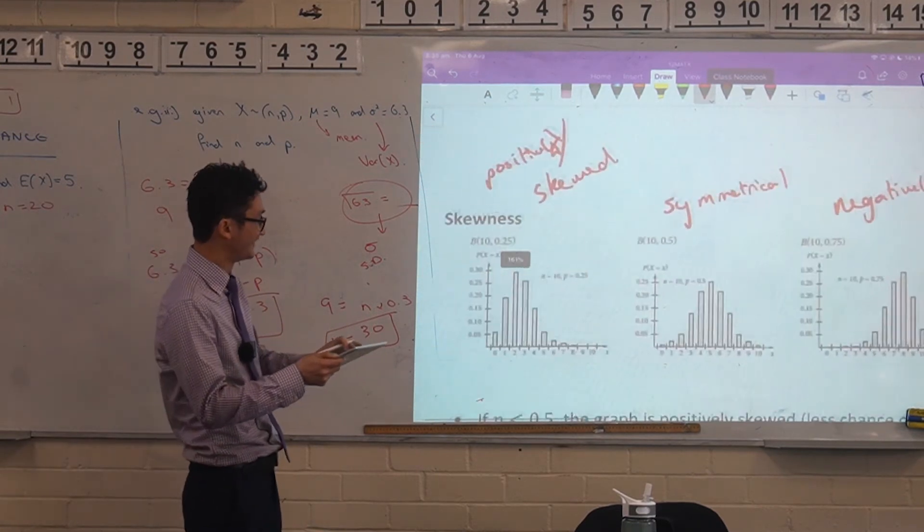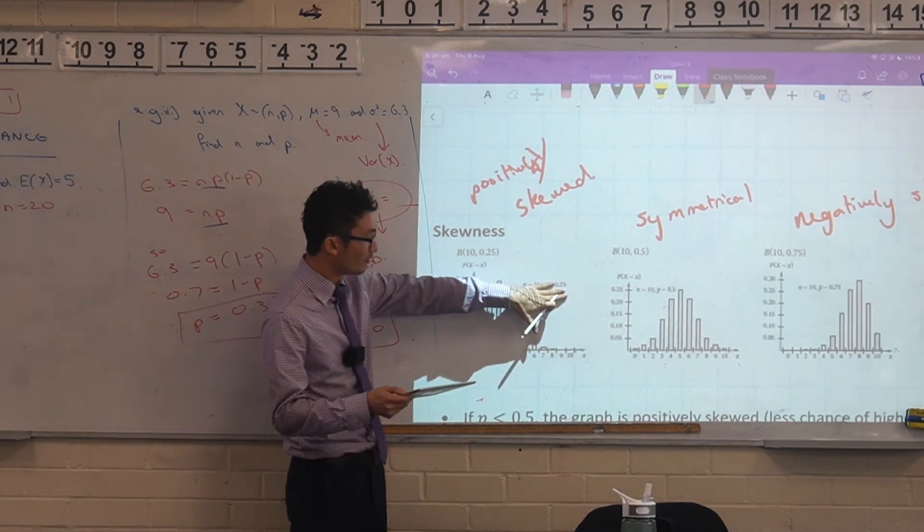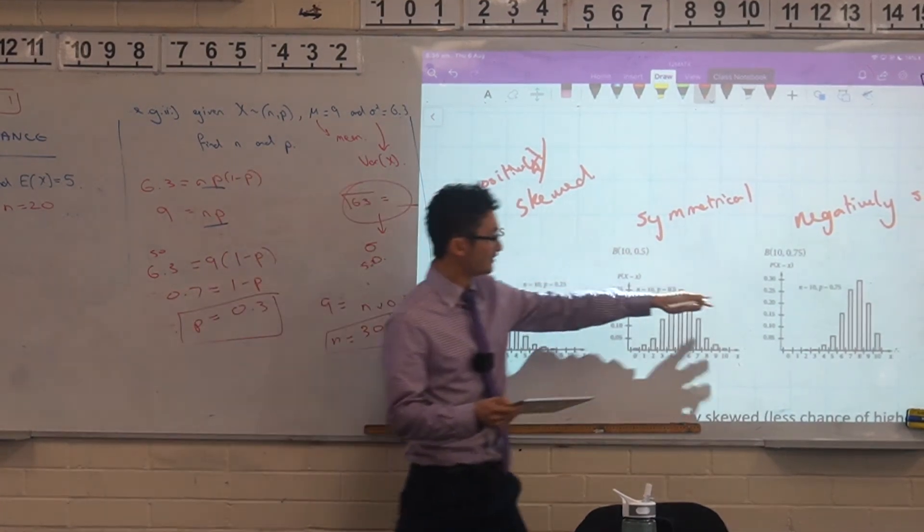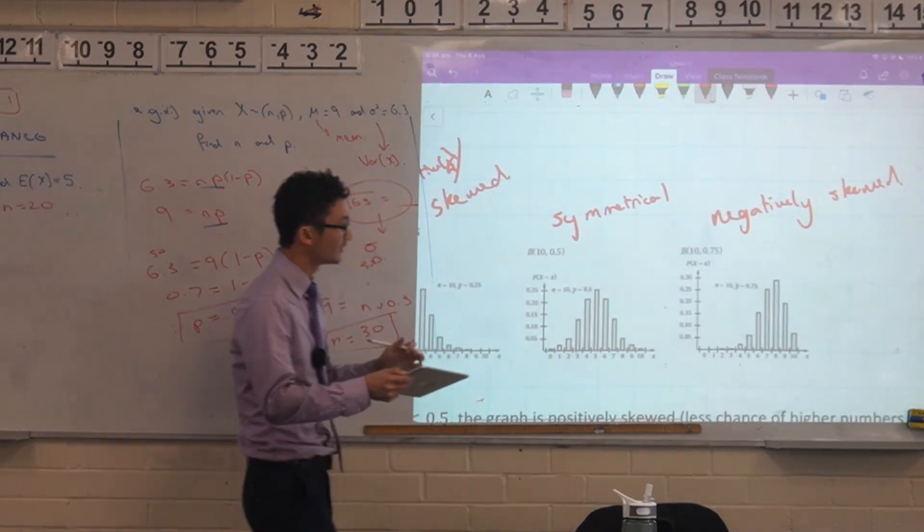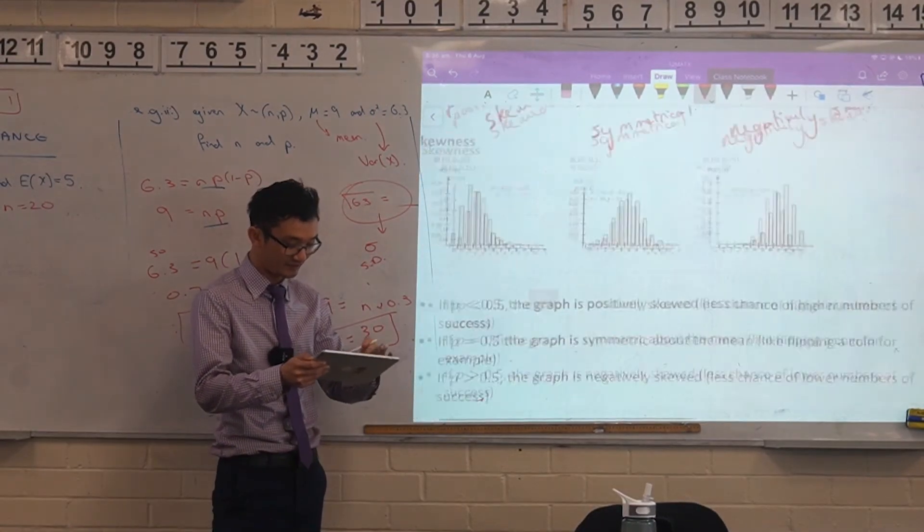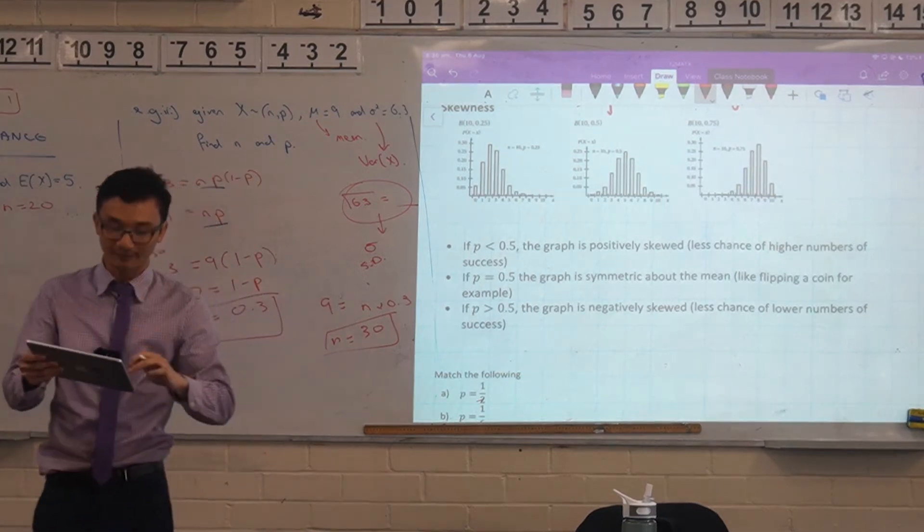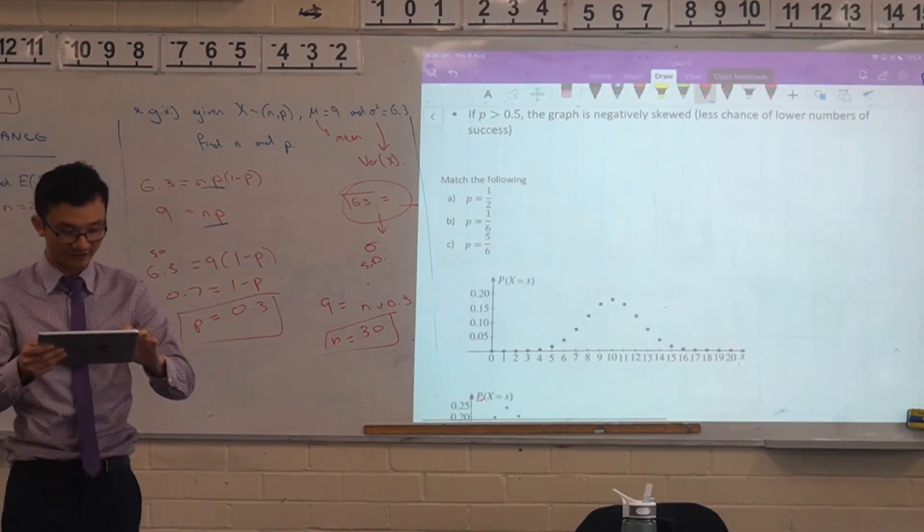So positively skewed if the probability is less than half, negatively skewed if the probability is greater than half, and then symmetrical if it's exactly half. You guys can summarize that information yourselves, right? But I'll just show you a few questions related to that.